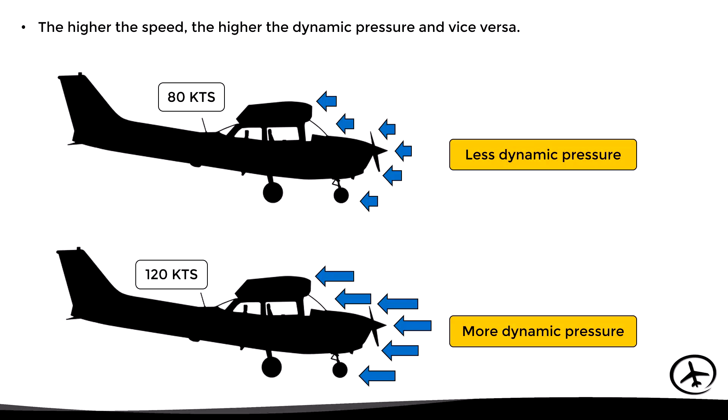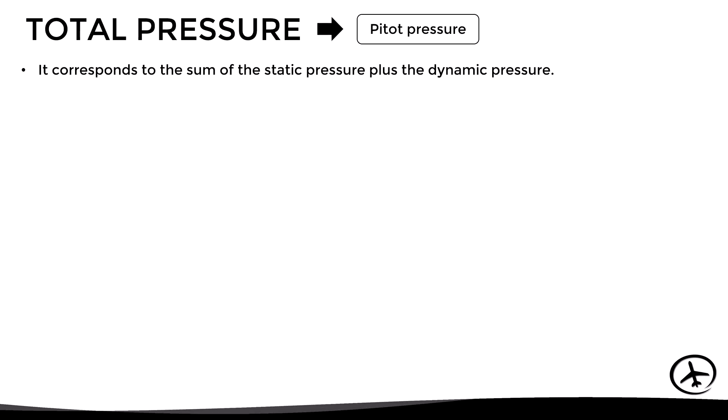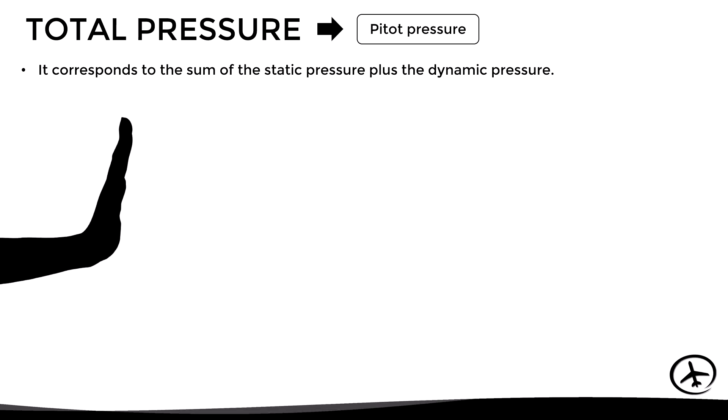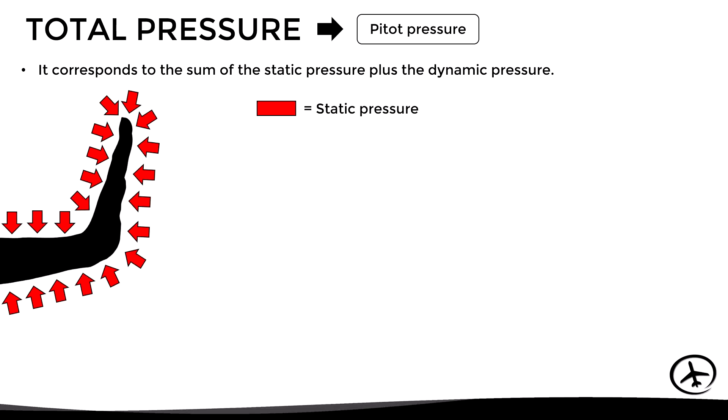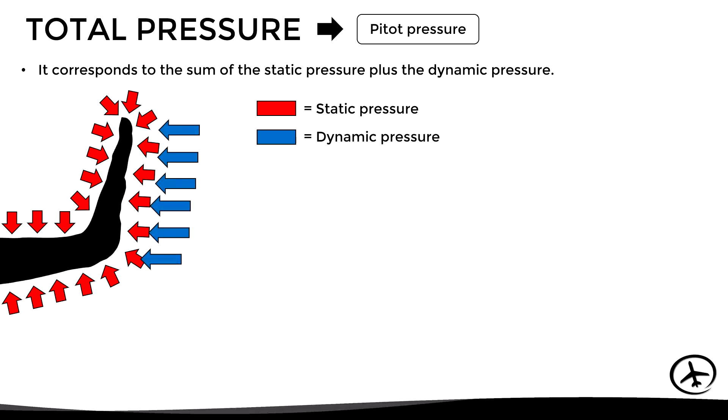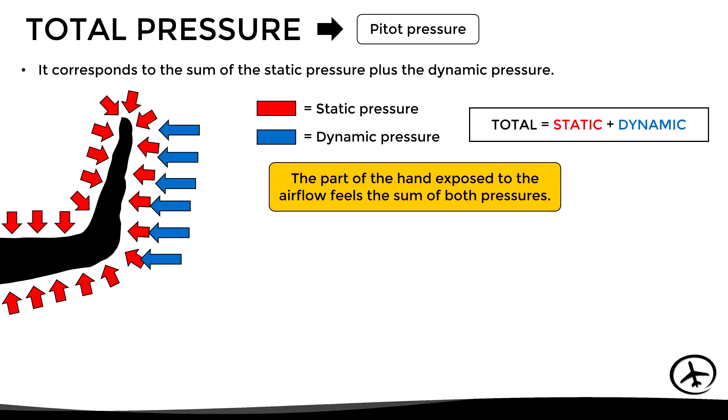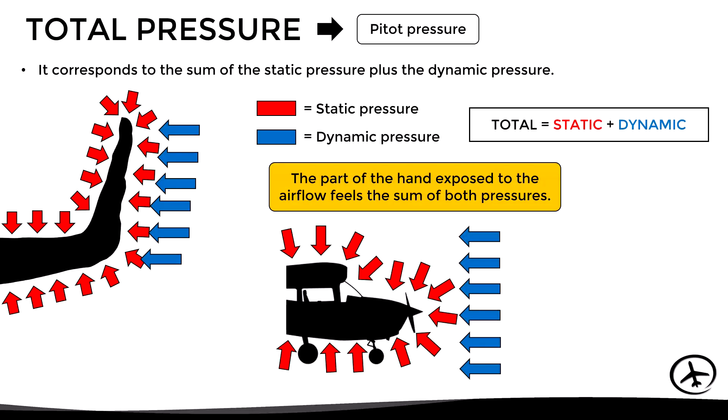For example, flying at 80 knots will produce less dynamic pressure than flying at 120 knots. The last type is total pressure, also known as pitot pressure — this corresponds to the sum of the static pressure plus the dynamic pressure. To illustrate this, suppose we are traveling on the highway and put one hand out the window with the palm exposed to the airflow. The hand experiences static pressure, which is always present regardless of movement, and also dynamic pressure due to the airflow. So in the palm of your hand you experience the sum of both, and this is exactly what happens with an aircraft moving through the air.